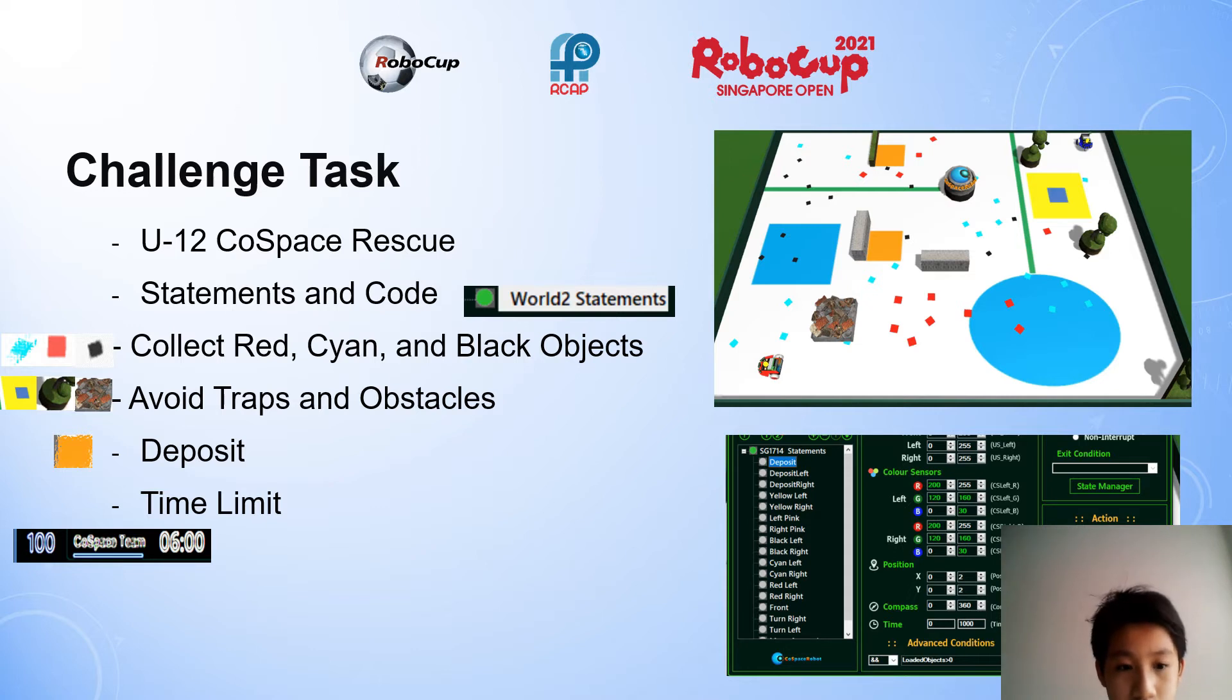So about the challenge task, we are in the Under 12 CoSpace Rescue category and this is the map over here. We have to write statements and code in order to allow the robot to move about collecting red, cyan, and black objects. The robot has to do that while avoiding traps like the blue encased in yellow squares or other obstacles to avoid getting trapped or losing all its points. It has to deposit as it can only collect six objects at a time without depositing and when it deposits the loaded object score will double.